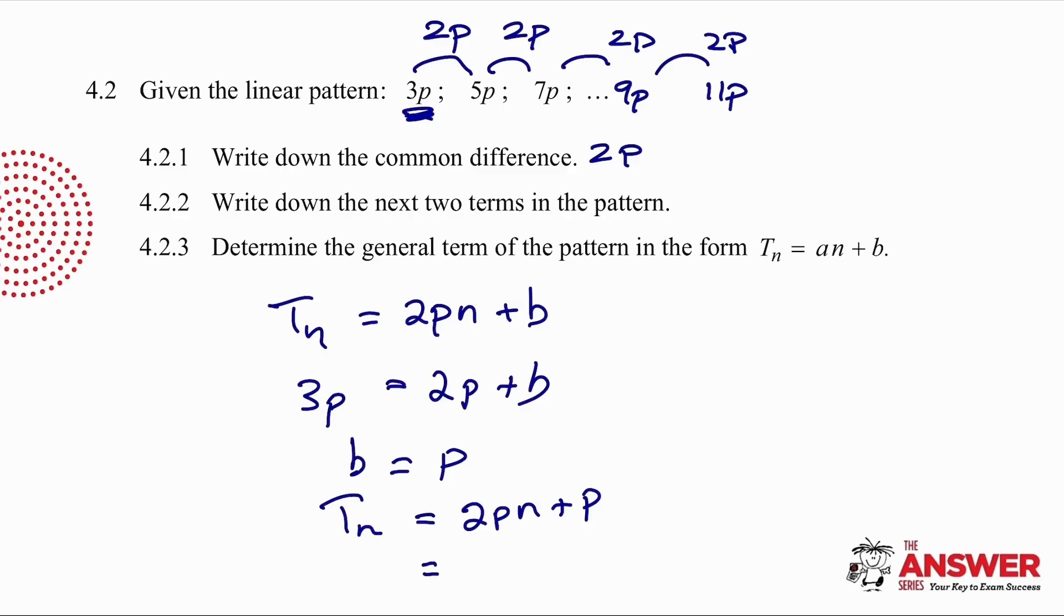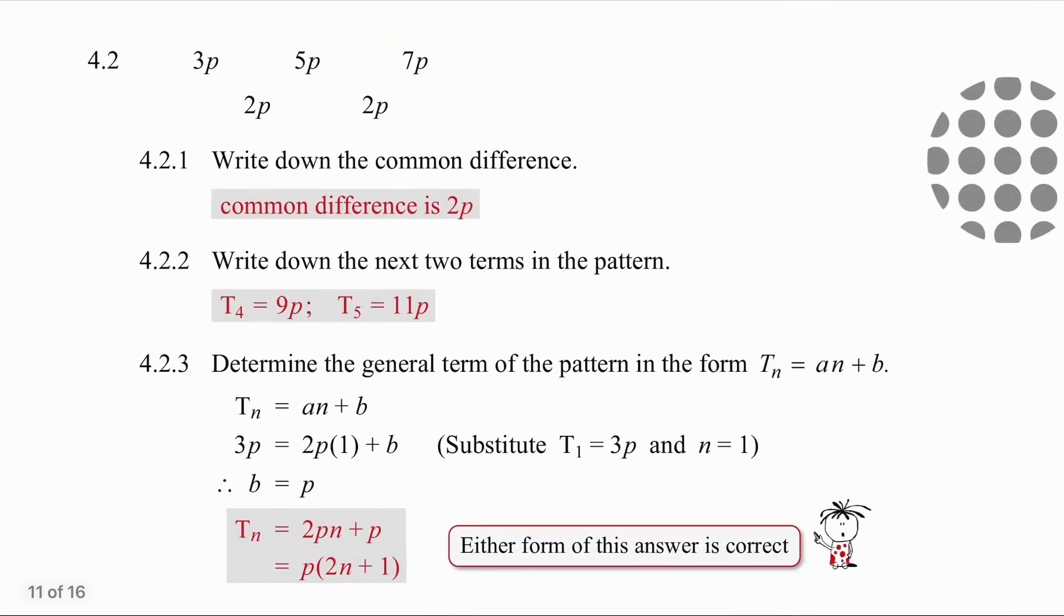It's worth noting that if you take p as a common factor, you get 2n plus 1, which is very similar to the formula we had in the previous question, where we had the answer as 2n plus 1. So the only difference when each term has the same variable is that the variable is a common factor and becomes part of the formula. Pause the video, take this at your own pace, and then we'll move on.